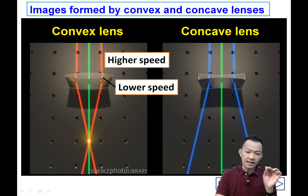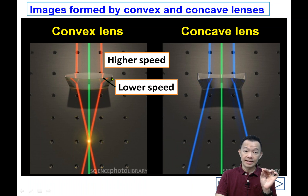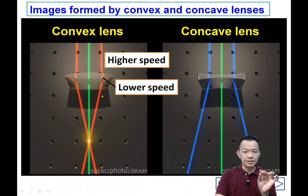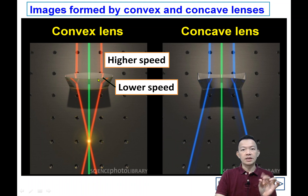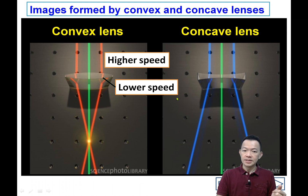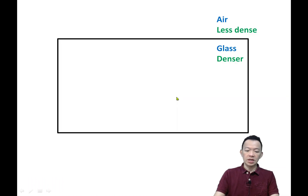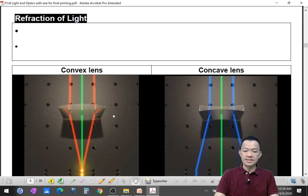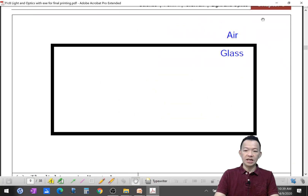For example, in the air the density is low and the speed of the light will be higher. When the light enters the glass, because of the higher density, the speed of the light becomes lower. So when the speed changes, the direction of the light will change as well.